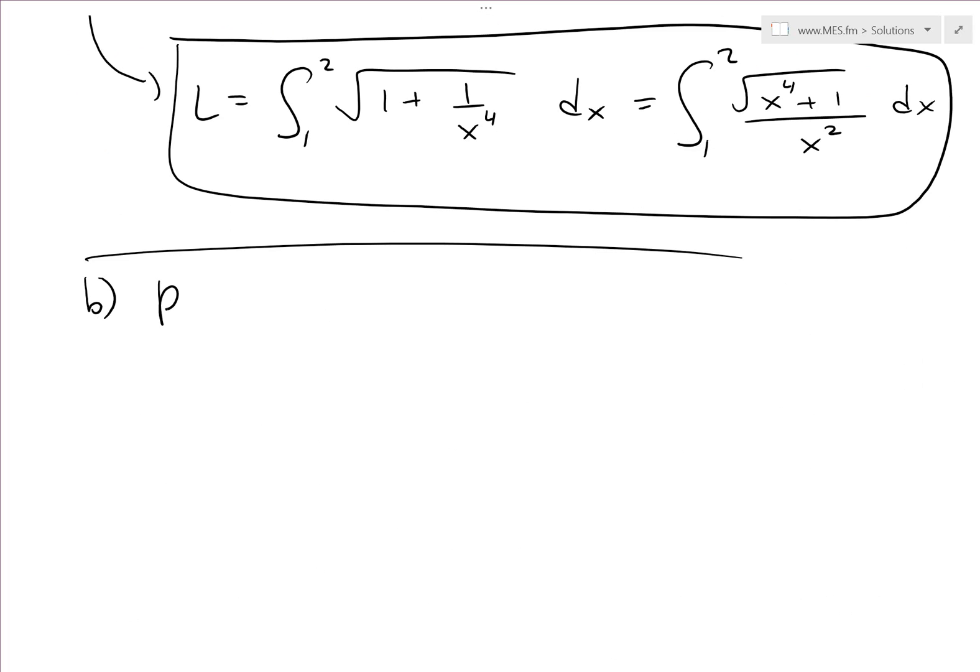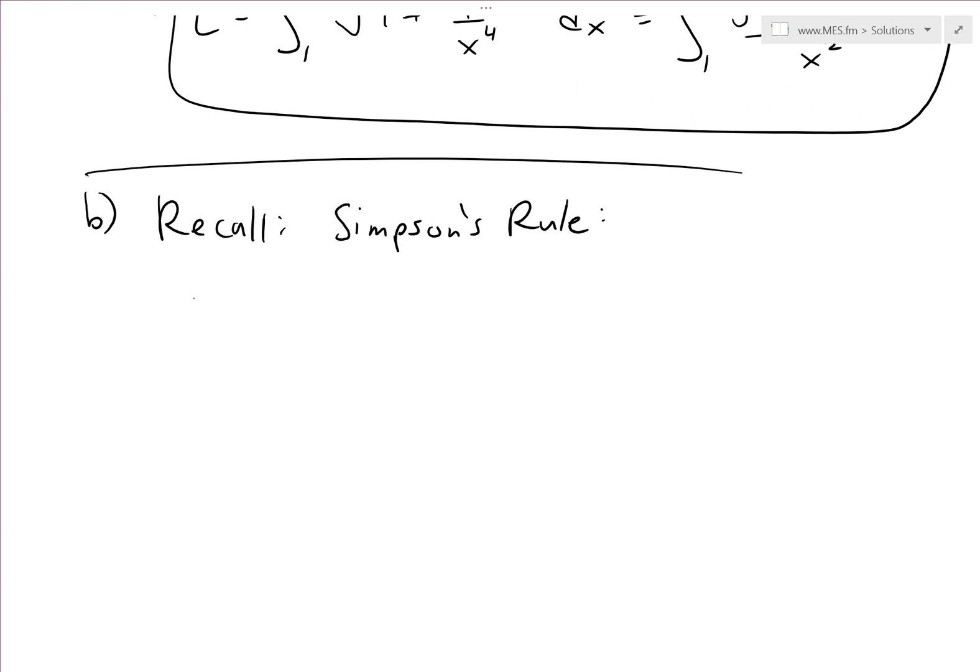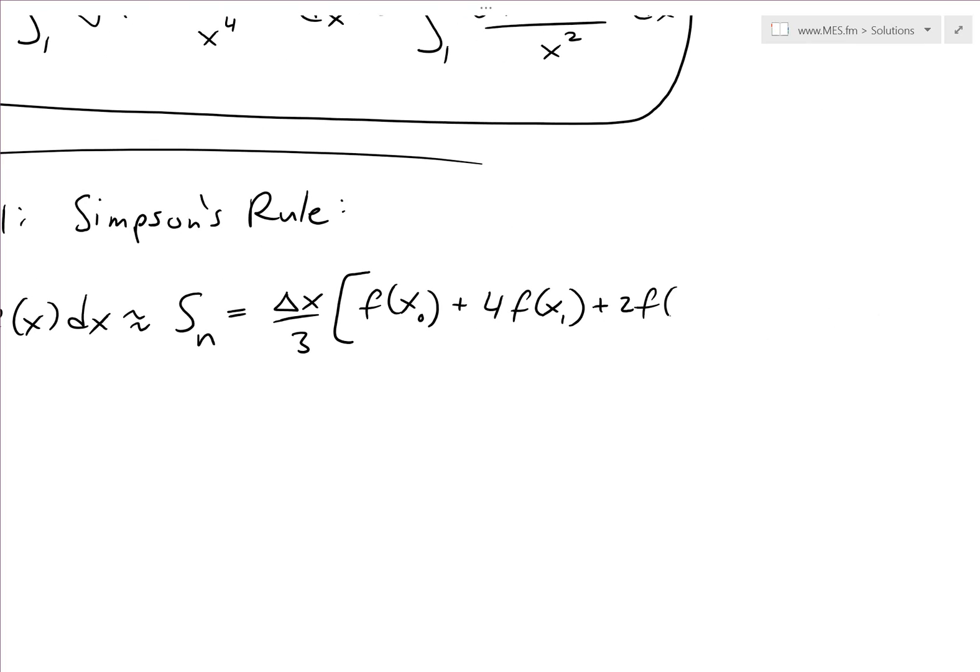So if we recall the Simpson's rule, which I went over in my earlier video. So recall Simpson's rule right here. What this equals to is basically the integral from A to B of f(x) dx is roughly equal to Simpson's rule with 10 intervals, or S_n. And this equals to delta x over 3. And then we have f(x_0) plus 4 f(x_1) plus 2 f(x_2), and then plus 4 f(x_3). And it keeps following this exact pattern of 4, 2, 4, 2.